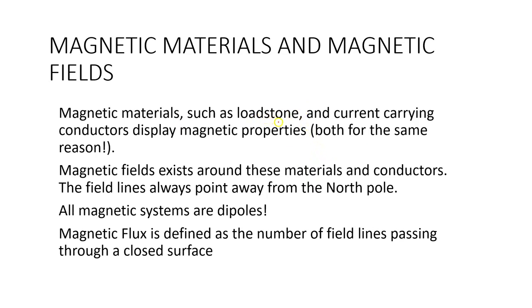There are certain materials that can be referred to as magnetic materials. If you do chemistry, you'll come across some of those. One thing we can refer to as a magnetic material is what we call lodestone. There are other metals or materials that have magnetic properties, meaning they are able to attract or have some type of magnetic field around them. Not all materials have a magnetic property, but some have varying magnetic properties.